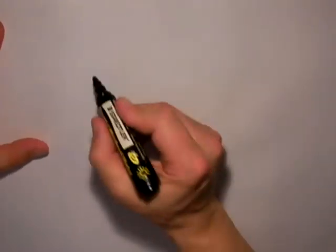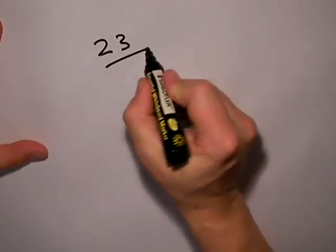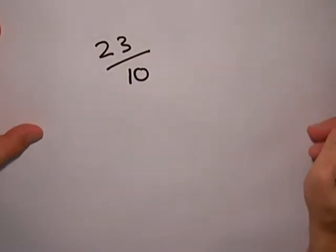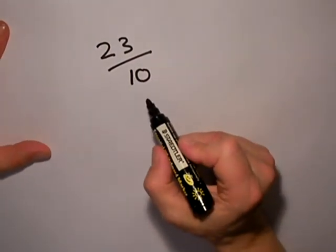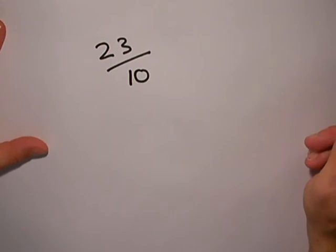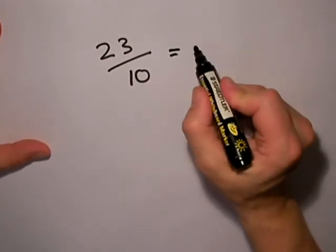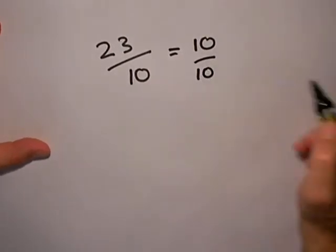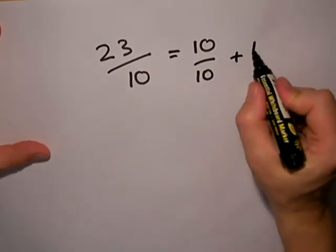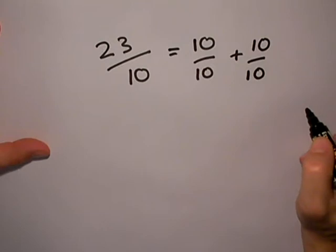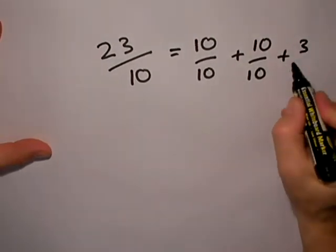The next example I'm going to do is 23/10. In the same way, if I think of how many tenths make a whole one—I need ten tenths to make a whole one—so I can make one whole one, ten tenths. I've got enough to make another whole one, another ten tenths, and I've got three tenths left over.